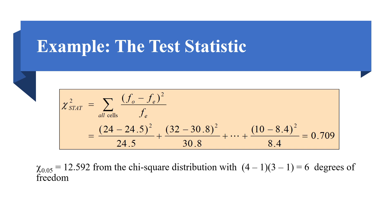We then calculate the test statistic using the formula: sum of (fo − fe)² / fe for each cell, adding all values together. The critical value at the 0.05 significance level is 12.592, from the chi-square distribution with (4−1)(3−1) = 6 degrees of freedom, where there are 4 rows and 3 columns.